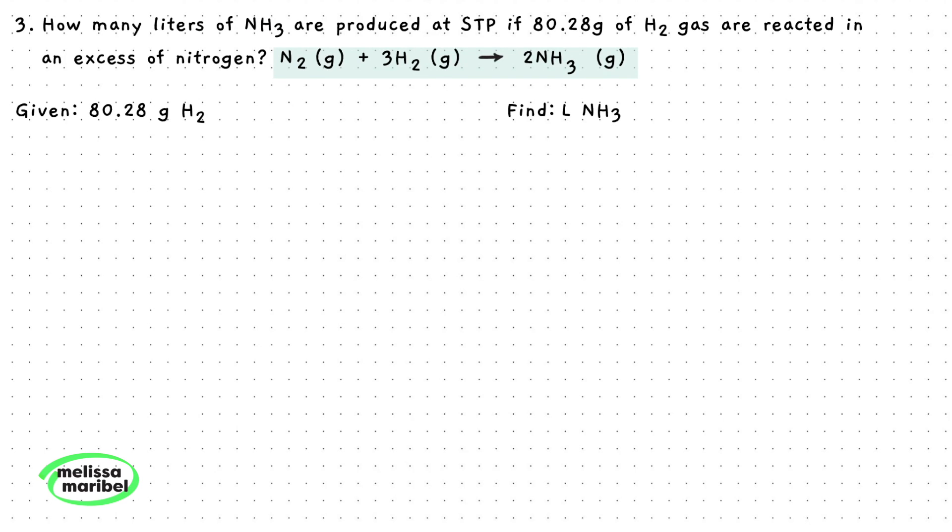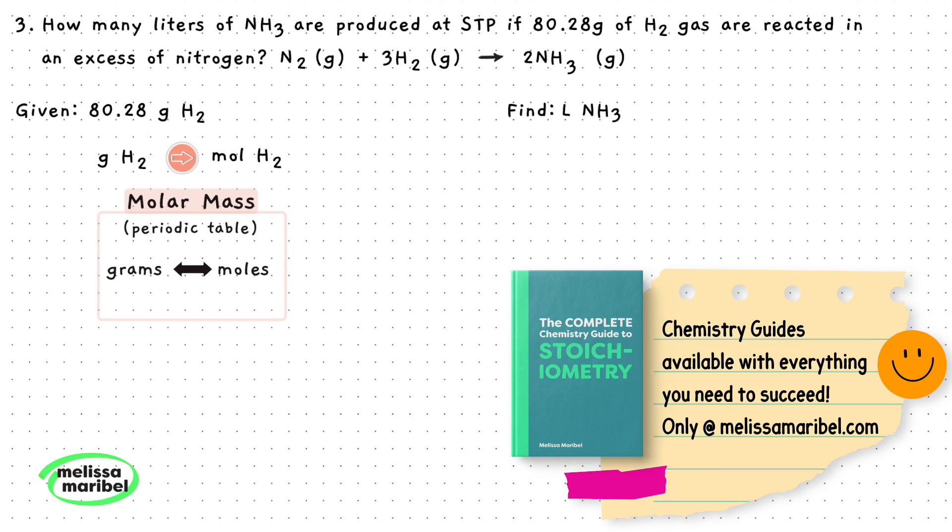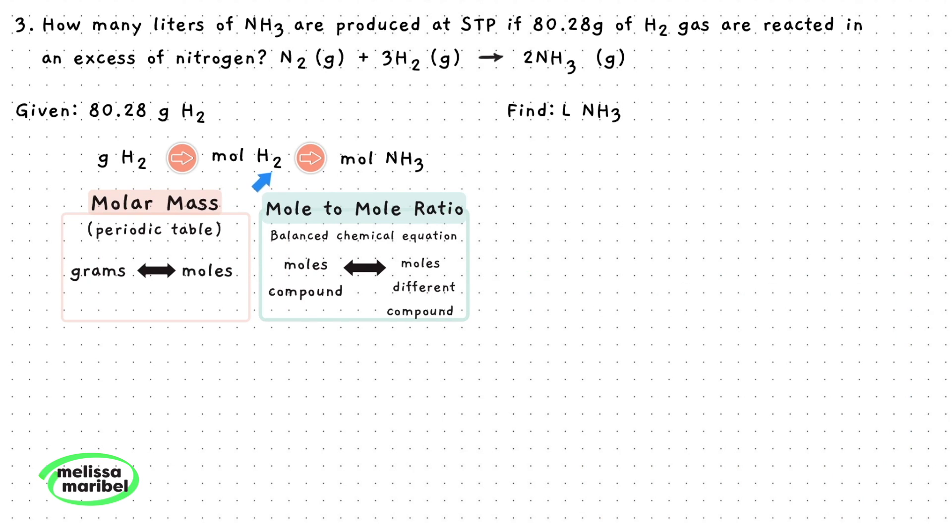So here's our plan. We will start with converting the grams of H2 to moles of H2 by using the molar mass of H2. Next, since we want to find the liters of NH3 and not H2, we need to change this, so we will use a mole to mole ratio to go from moles of H2 to moles of NH3. Last part is to change moles of NH3 to liters of NH3. We will use this conversion factor since there was a keyword in the question which was STP.